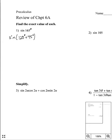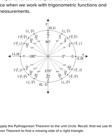In this case, sine of x plus y is equal to sine of the first angle — 120 — times cosine of the second angle — 45 — plus cosine of the first angle — 120 — times sine of the second angle — 45. And then we can plug into each of these using our unit circle. Sine of 120 is root 3 over 2.